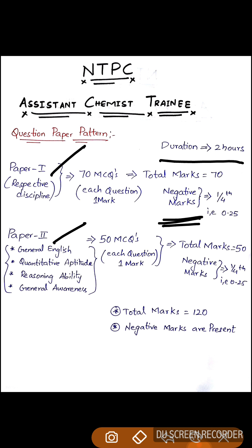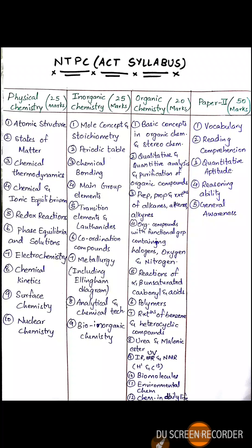Paper 2 consists of General English, Quantitative Aptitude, Reasoning Ability, and General Awareness — there are no chemistry questions in Paper 2. Paper 2 has 50 multiple choice questions, each carrying one mark, totaling 50 marks. Paper 2 also has negative marking — 0.25 marks are deducted for each wrong answer. The total marks for Paper 1 and Paper 2 combined is 120.